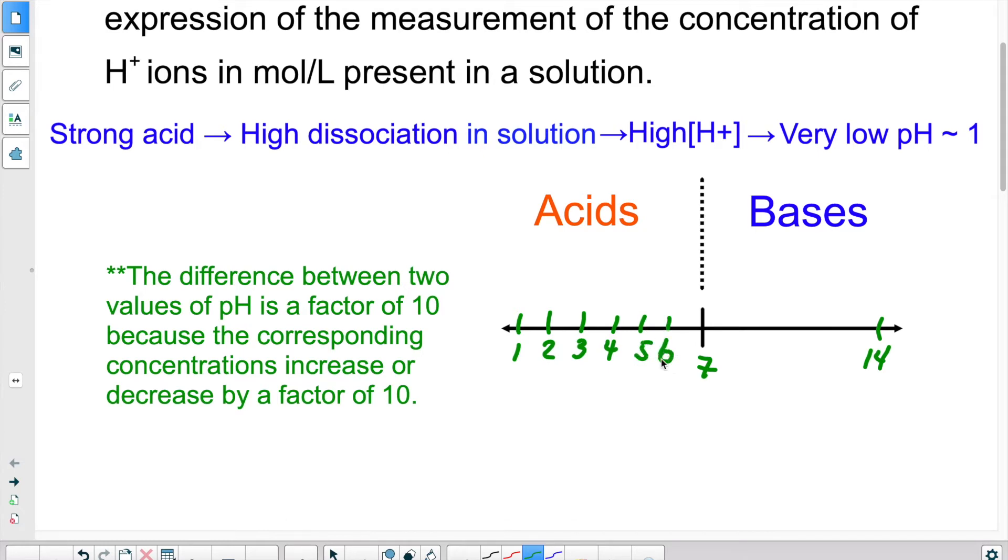So a solution that has a pH of let's say 4 versus a pH of 5, the difference between the two is not 1, it's actually a power of 10. So a pH of 5 is 10 times less acidic than a pH of 4.